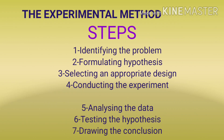Then, testing the hypothesis after the data analysis. Then, drawing the conclusion. So, to summarize, the steps of experimental methods are: identification of the problem, formulation of hypothesis, selection of appropriate design, conducting the experiment, analyzing the data, testing the hypothesis, and drawing the conclusion. These steps are followed in the experimental method.